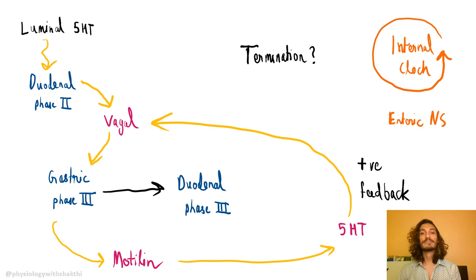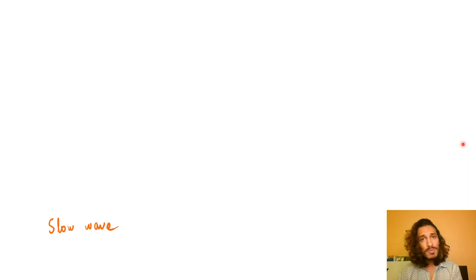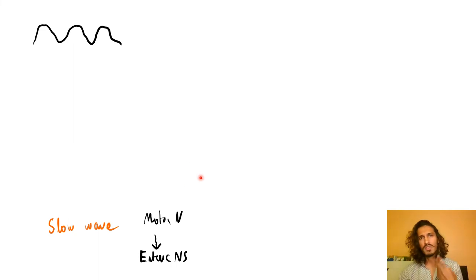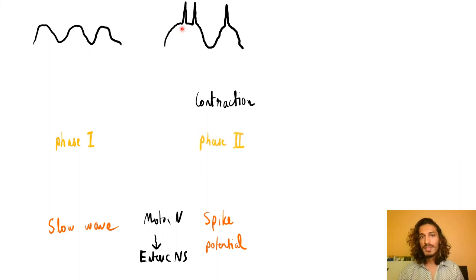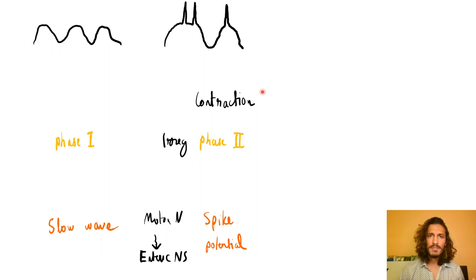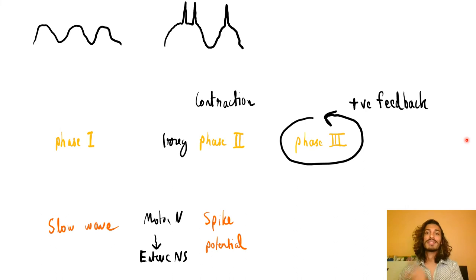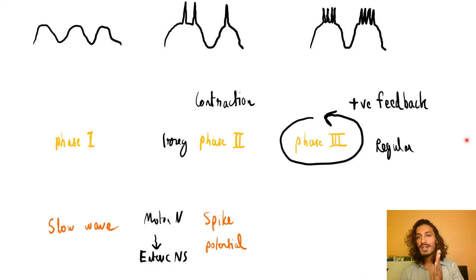To clarify the underlying electrical activity: smooth muscles of the GIT have slow wave complexes. The dorsal vagal motor nucleus activates the enteric nervous system, resulting in spike potentials. In Phase one, only slow waves are present — no spike potentials — hence no contractions. By Phase two, irregular bursts of spike potentials appear, leading to some contractions. In Phase three, the positive feedback mechanism generates regular bursts of spike potential activity.